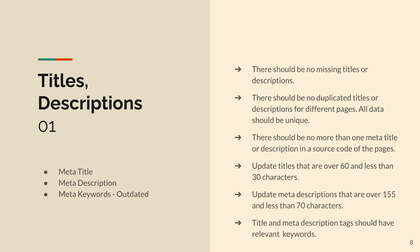Whenever you are auditing your site, take a look and check: there should be no missing titles and no missing descriptions on each page. There are plenty of tools you can utilize to crawl your site and check if there are any missing titles or descriptions. There should also be no duplicated titles or descriptions for different pages — the same meta title and meta description on multiple pages is not allowed. No duplication across multiple pages and no duplication inside one page. Only one meta tag is allowed per page.